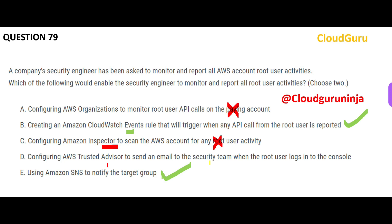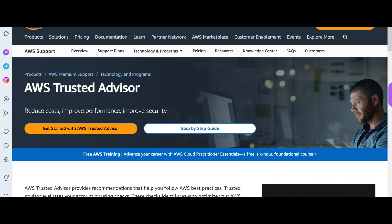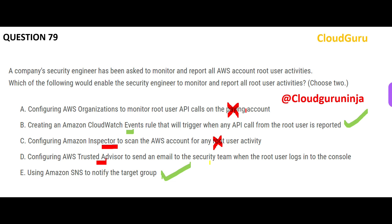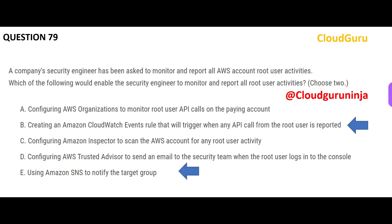Trusted Advisor is like a consultant — it gives you suggestions to reduce cost. For example, in real life it tells you that five EC2 instances were idle for 15 days, giving you an indication to shut them off or add automation. Trusted Advisor will not help you with this use case of monitoring root user activities. So that option is wrong, and our CloudWatch Events rule plus SNS answer is correct.